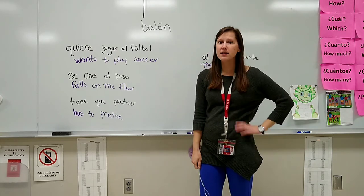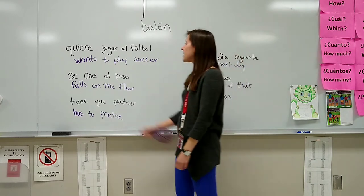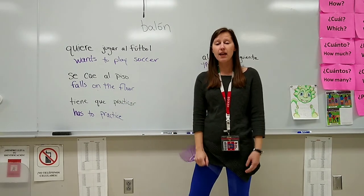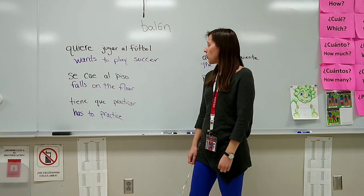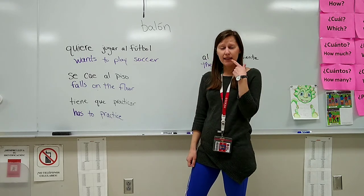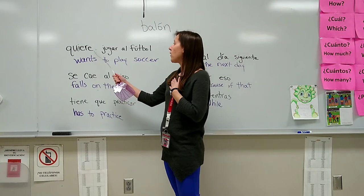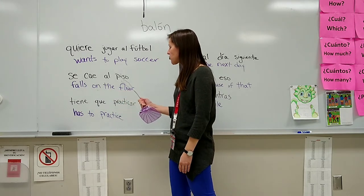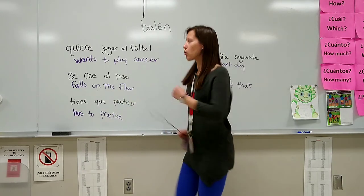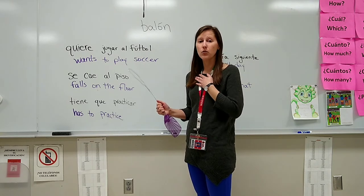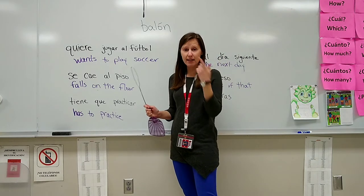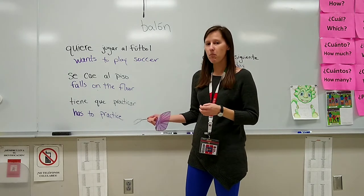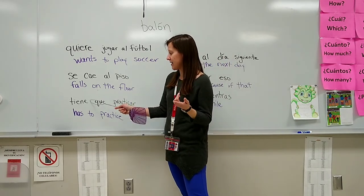Olivia está frustrada. Está enojada. Ella quiere jugar al fútbol pero se cae y se cae al piso. No tiene talento. Entonces, ella necesita una solución. Olivia va a su hermano y le dice: Hermano, yo quiero jugar al fútbol, pero me caigo al piso cuando corro hacia el balón. Necesito una solución. El hermano le dice: Olivia, tienes que practicar. The brother tells her: you have to practice. That's why he says tienes and not just tiene.